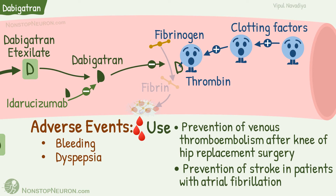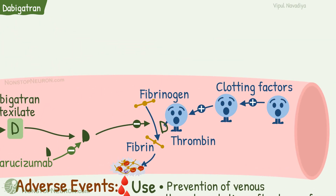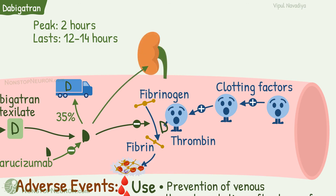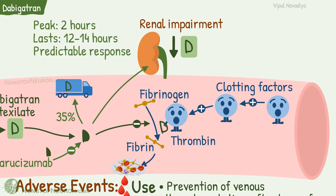Another side effect with dabigatran is dyspepsia. Regarding the remaining pharmacokinetics: dabigatran is 35% plasma protein bound. Its peak action is seen after 2 hours of administration. Duration of action is 12 to 14 hours. Finally, 80% of the drug is excreted unchanged by the kidneys. As the kidney is the main route of excretion, the dose should be reduced in patients with severe renal impairment. A fixed dose of dabigatran produces a predictable anticoagulant response, so generally monitoring is not required with dabigatran therapy.